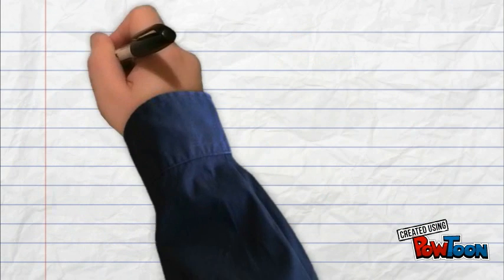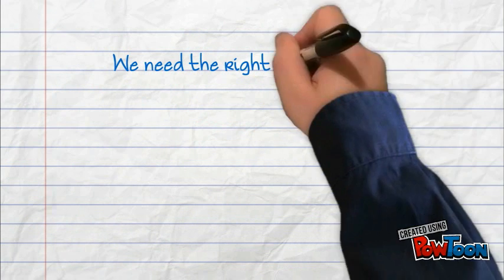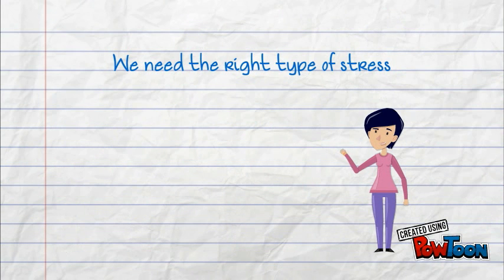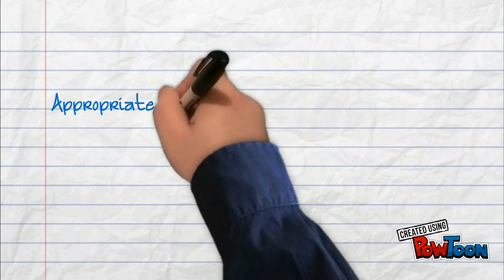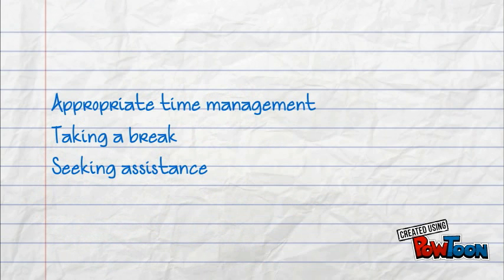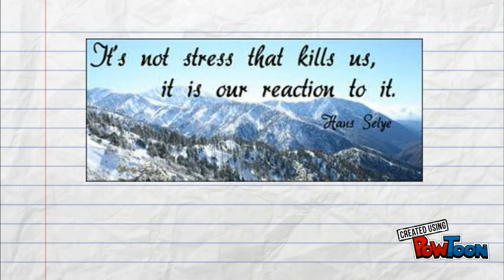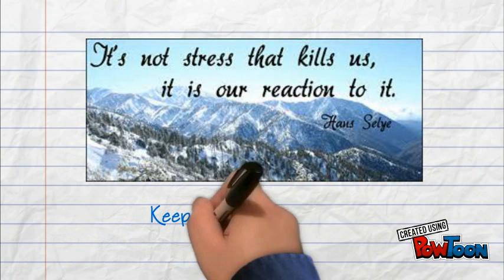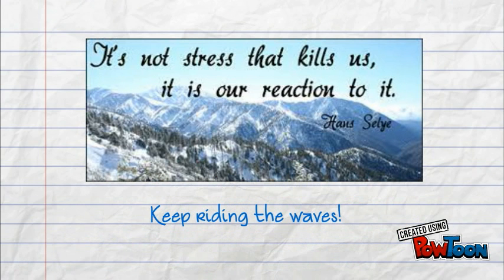At the end of the day, we really just need the right type of stress in order to function at our best. We can accomplish this through incorporating appropriate time management, taking a break when you need one, and seeking assistance when everything just seems too overwhelming. It's not stress that kills us, but our reaction to it — so try to live life with a calm mind and keep riding the waves.